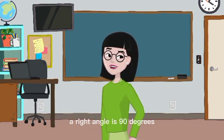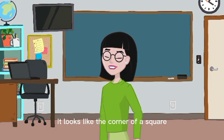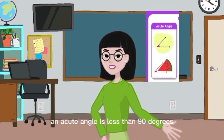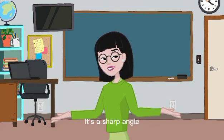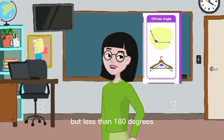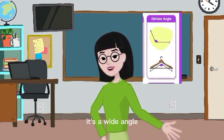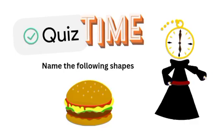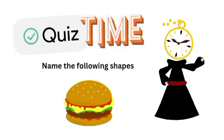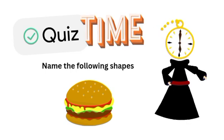A right angle is 90 degrees. It looks like the corner of a square. An acute angle is less than 90 degrees. It's a sharp angle. An obtuse angle is more than 90 degrees but less than 180 degrees. It's a wide angle.